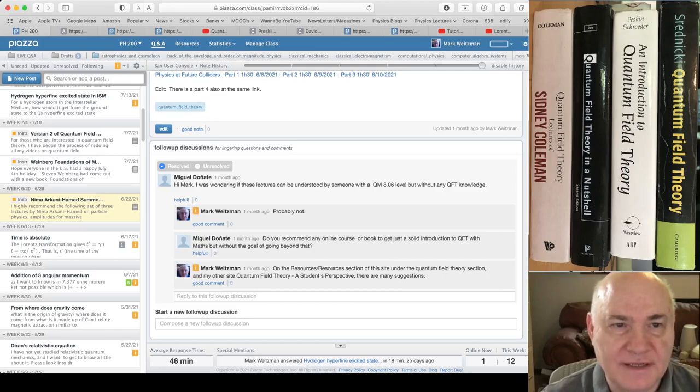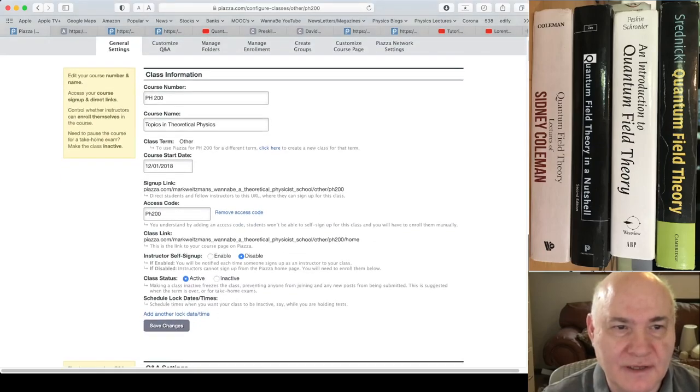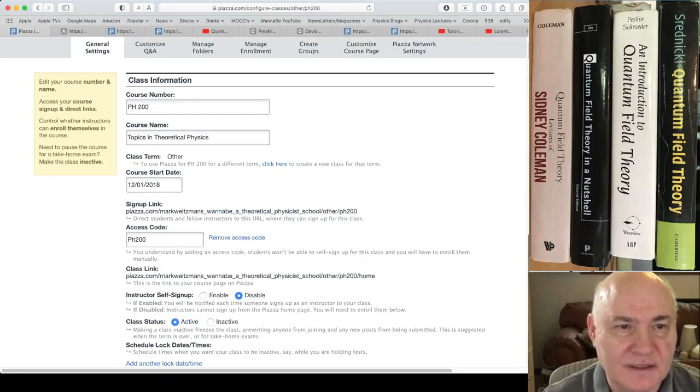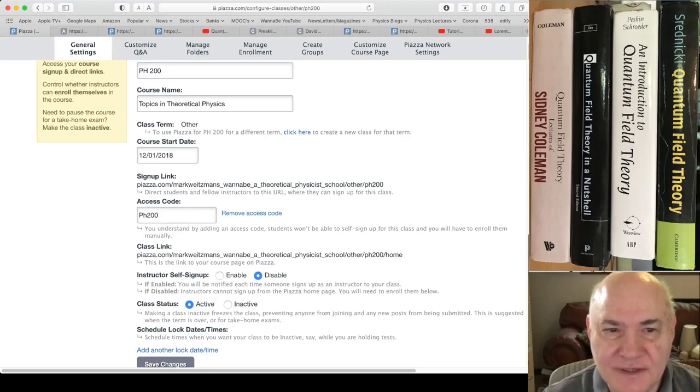In terms of signing up, all you have to do is go to the link. I'm gonna... let me make this larger for my Topics in Theoretical Physics. All of my two courses, when you go to the sign-up page, you'll have to pick what kind of year or what class term. Since the year constantly changes but I want to keep this course open forever, I've chosen other. And this is the sign-up link over here.